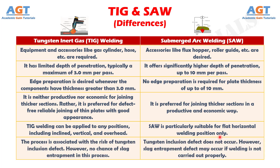Difference number 17: the TIG welding process is associated with the risk of tungsten inclusion defect; however, there is no chance of slag entrapment in this process. Whereas tungsten inclusion defect does not occur in submerged arc welding; however, slag entrapment defect may occur if welding is not carried out properly.